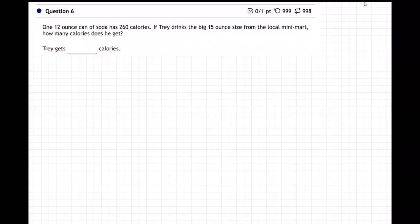Well, this is a ratio, so what you do is you take the 12 ounces has 260 calories. So 12 ounces, write a fraction here, and 260.